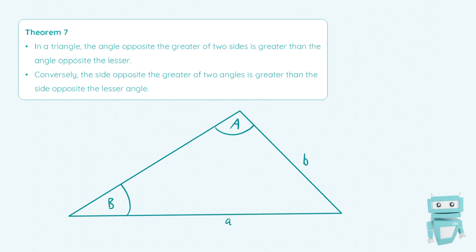And to begin this theorem we're going to look at the first point which says that in a triangle the angle opposite the greater of two sides is greater than the angle opposite the lesser.